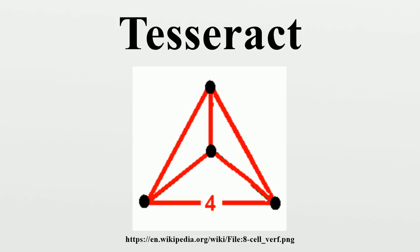It is the four-dimensional hypercube, part of the dimensional family of hypercubes or measure polytopes. According to the Oxford English Dictionary, the word tesseract was coined and first used in 1888 by Charles Howard Hinton in his book A New Era of Thought, from the Greek referring to the four lines from each vertex to other vertices. In this publication, as well as some of Hinton's later work, the word was occasionally spelled tesseract.